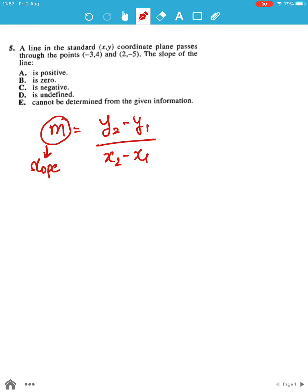Now we have two points: (-3, 4) and (2, -5). So here, -3 is x1, 4 is y1, and 2 is x2, and -5 is y2.